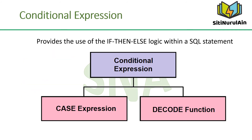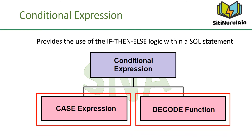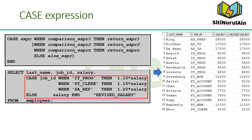The two methods used to implement conditional processing—if-then-else logic—in a SQL statement are the CASE expression and the DECODE function. CASE expressions allow you to use if-then-else logic in SQL statements without having to invoke procedures. In the SQL statement in the slide, the value of JOB_ID is decoded: if JOB_ID is IT_PROG, the salary increases by 10%; if JOB_ID is ST_CLERK, the salary increase is 15%; if JOB_ID is SA_REP, the salary increase is 20%; for all other job roles, there is no increase in salary.